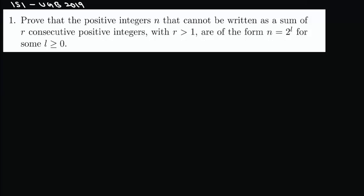Today I have decided to redo an ISI 2019 B-state B-math UGB problem. The problem is: prove that the positive integers n that cannot be written as the sum of r consecutive positive integers, with r greater than 1, are of the form n equals 2 to the power l, for some l greater than 0.